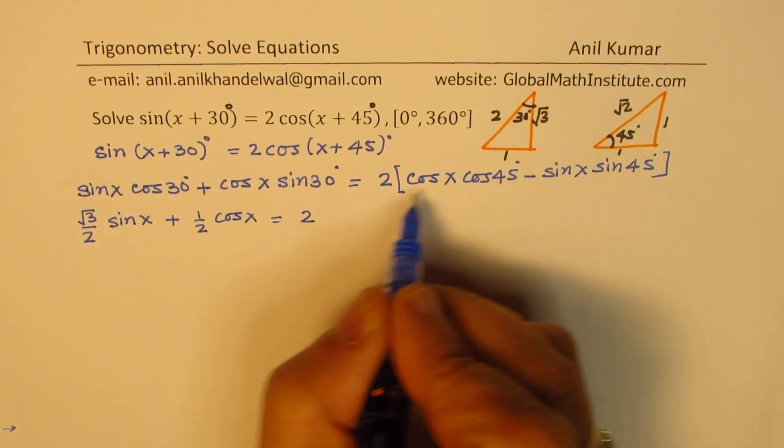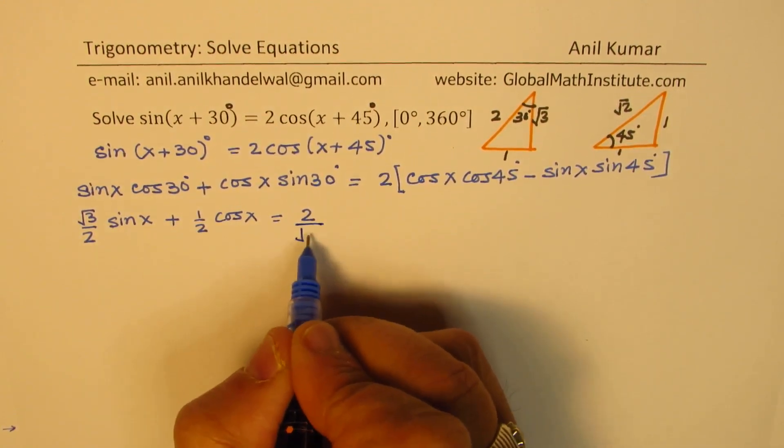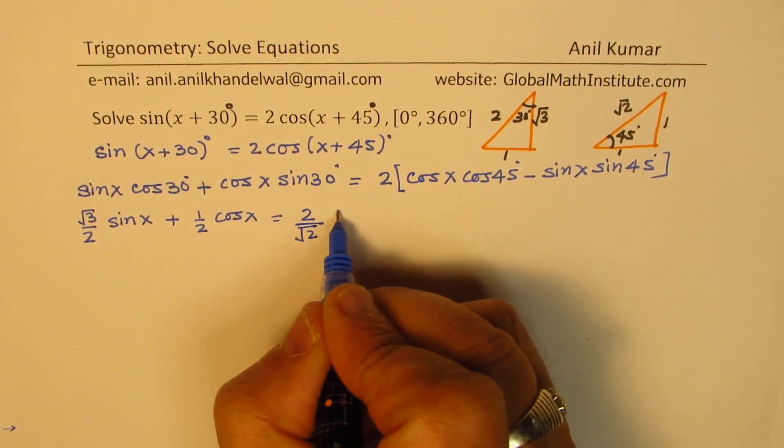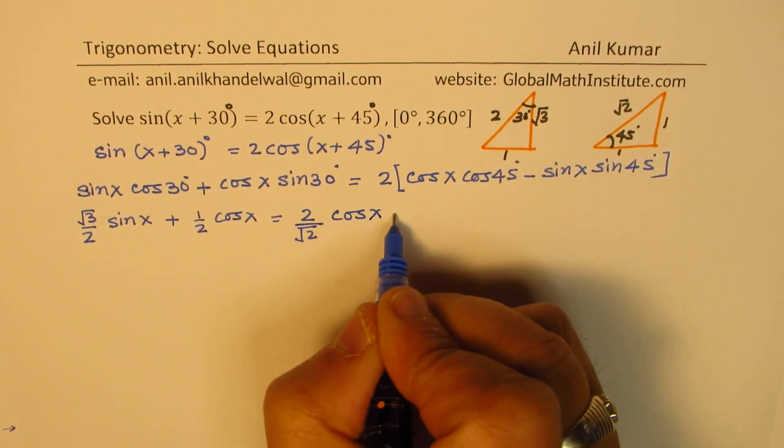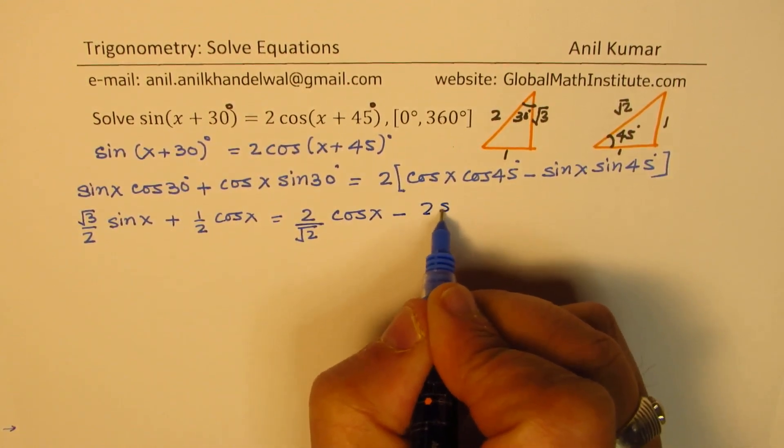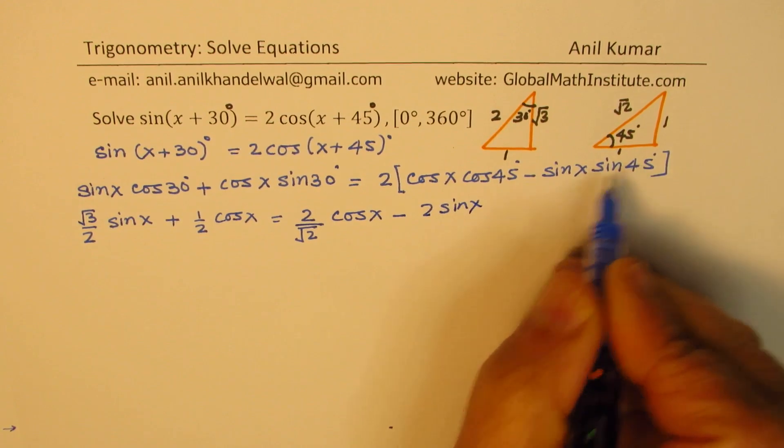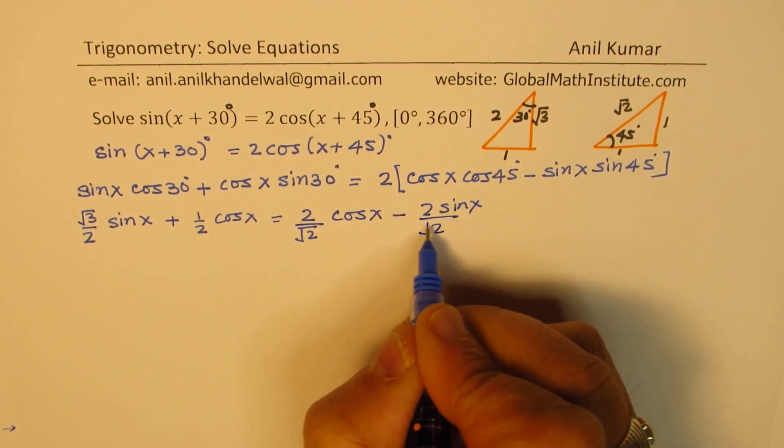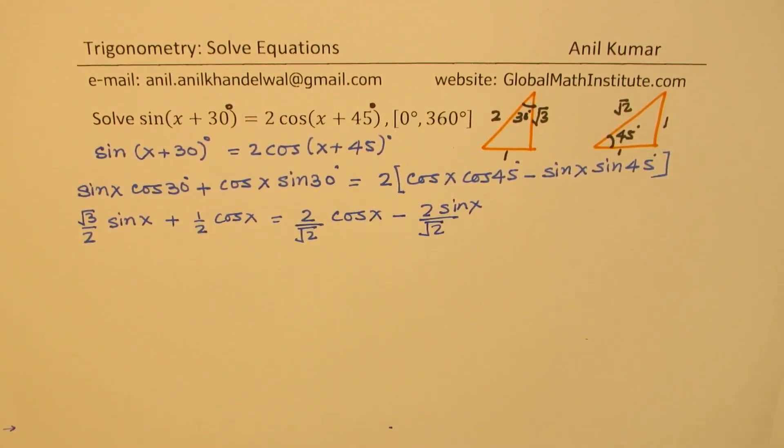We can open the bracket, cos x and cos 45. So cos 45 is square root of 2 in the denominator. We have cos x minus 2 times sin x over square root of 2. Now bring sine and cosine terms together.